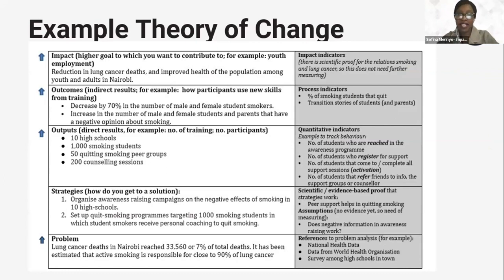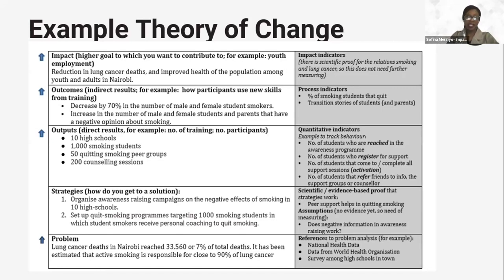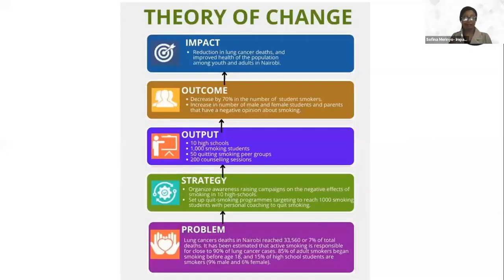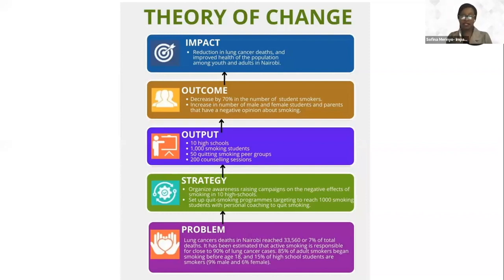Remember, in our definition of what a theory of change is, we say it's a diagrammatic representation of what you do as an organization. In a very simple way, it describes the problem, the strategy, the output, the outcome, the impact. This is very simple, but it can take different formats.